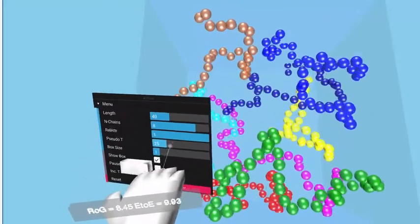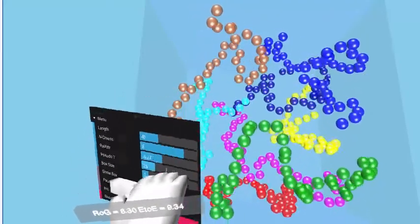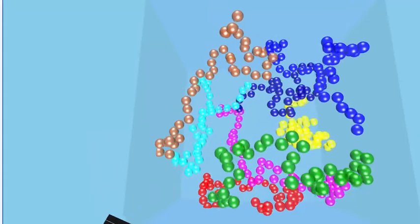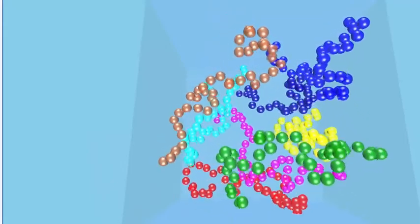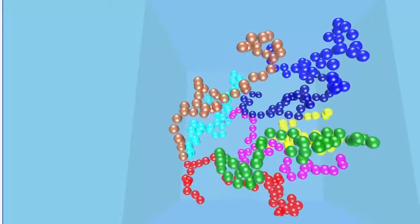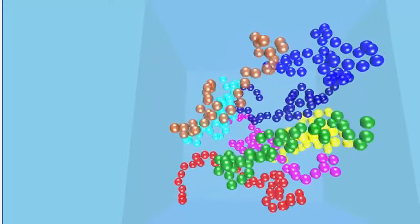If I go to somewhat lower interactions like this, then the chains start to curl in on themselves rather more, and so they won't interact with each other so much, so the viscosity is lower.